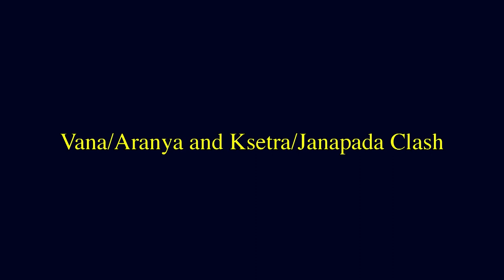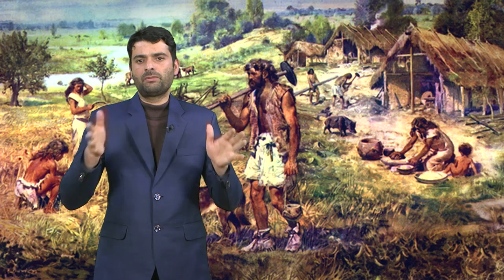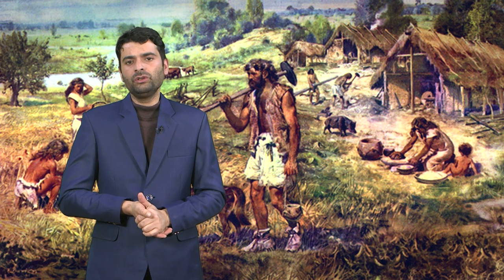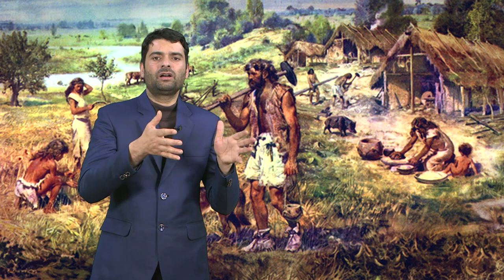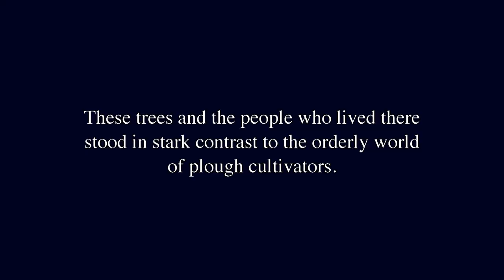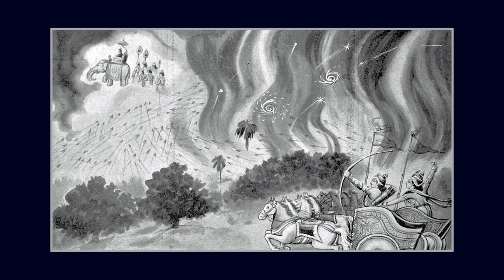Now, regarding Vaina, Aranya, and Sitra or Janapada. According to the Mahabharata, several demonic monsters as well as animals and people were obliterated during the burning of Khandavavana for the establishment of Indraprastha. These forest people stood in stark contrast to the orderly world of plough cultivators. But neither the Vaina or Aranya nor the Sitra or Janapada was homogeneous or unchangeable. There may be overlaps in actuality; therefore the alleged antagonism between these two systems was only maintained theoretically.